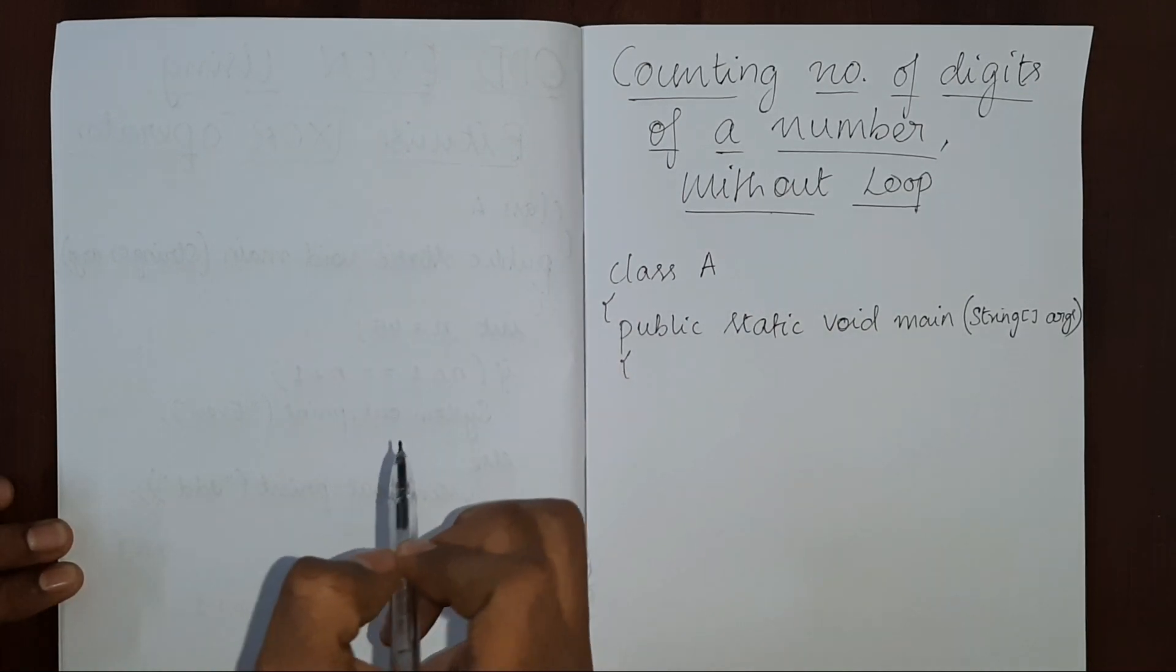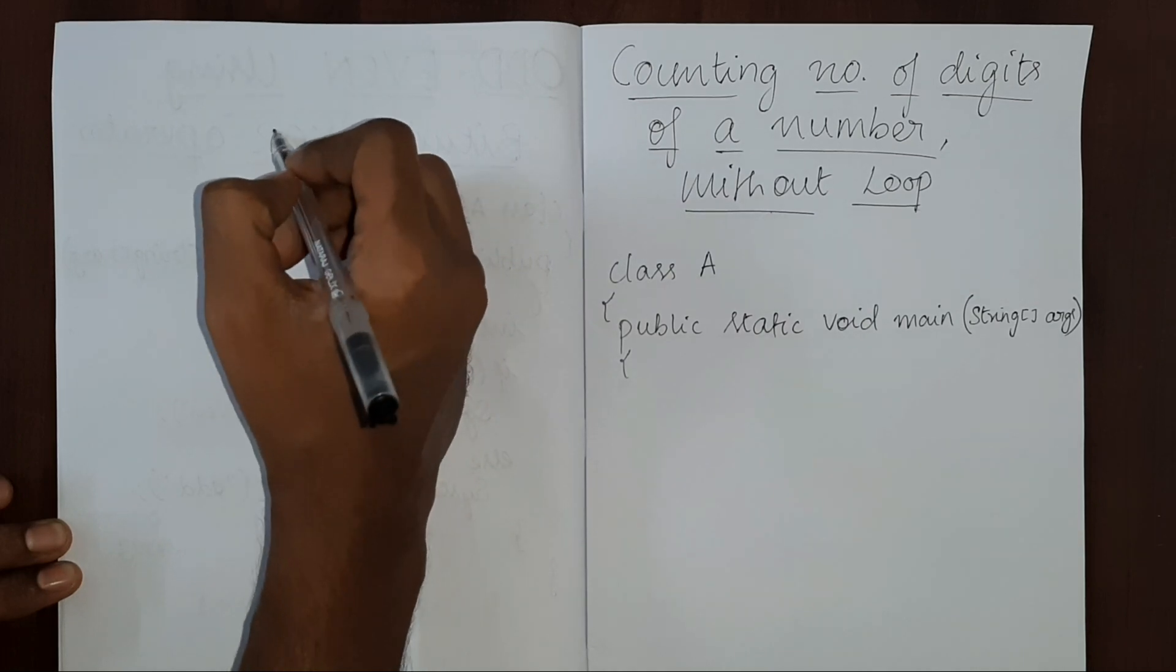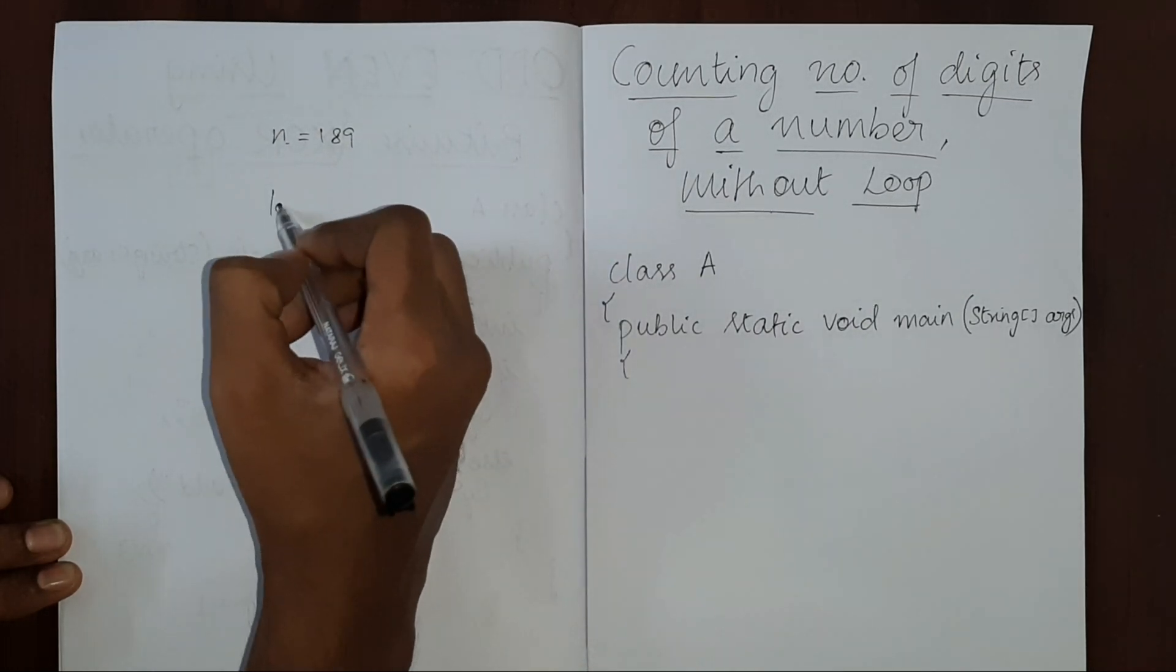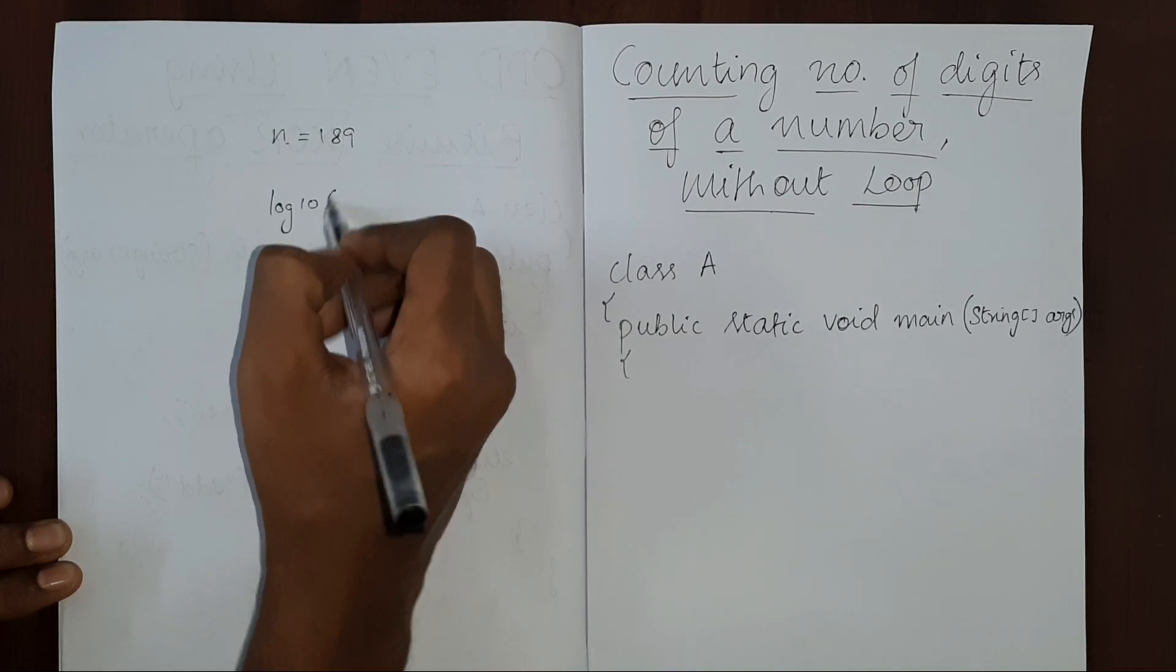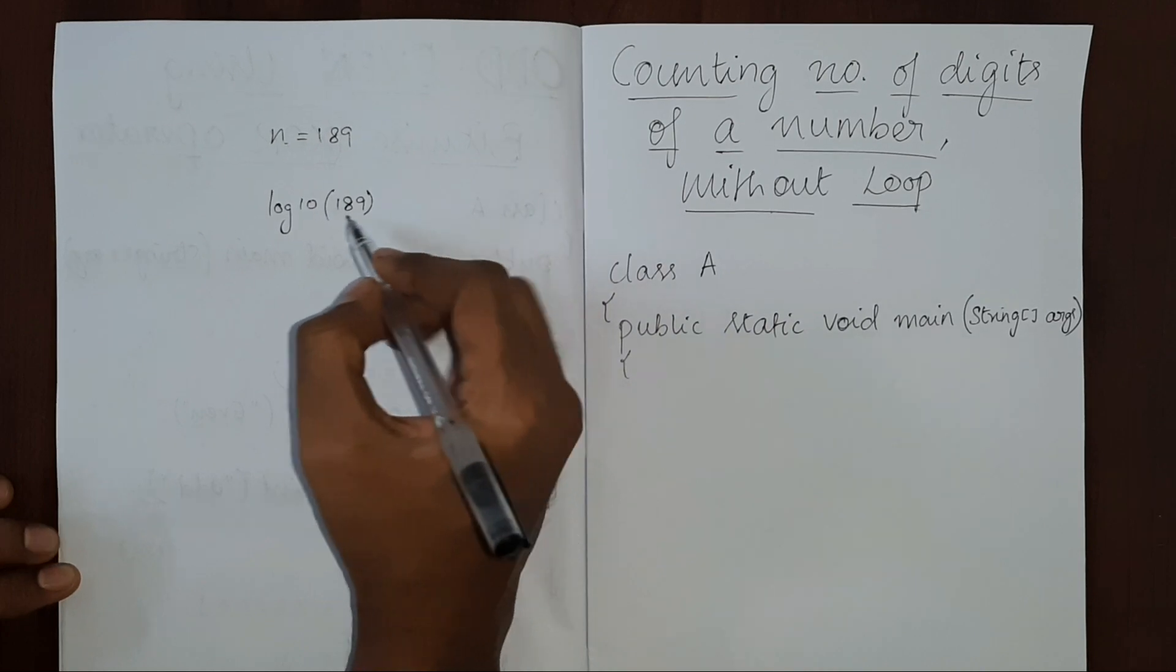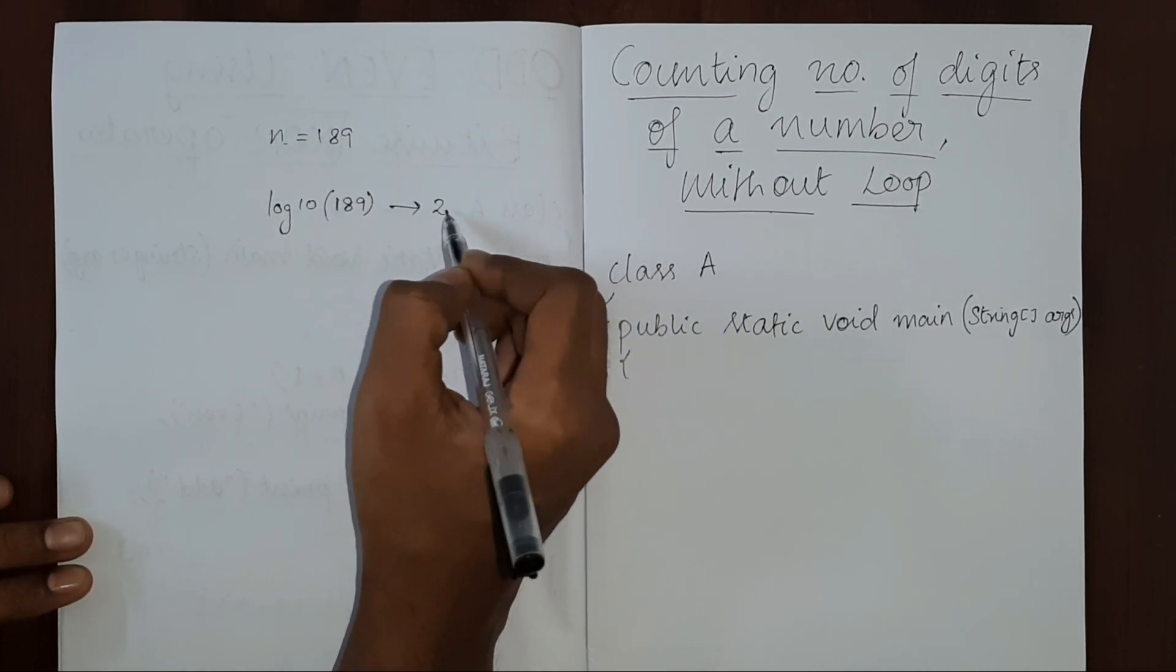So here is the code. We are going to use log. So if a number is given, say 189, if you use log base 10 and give this number as input, it will give a value which is less than the number of digits, that is 2.